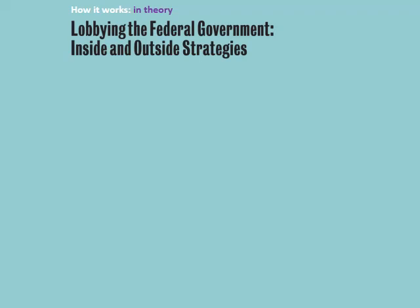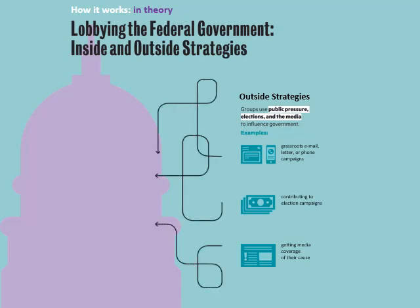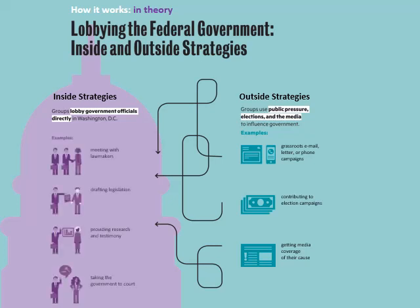In lobbying the federal government, outside strategies use public pressure, elections, and the media to influence government — examples include grassroots email, letter, or phone campaigns, contributing to election campaigns, and getting media coverage of your cause. Inside strategies include directly lobbying officials in Washington D.C., meeting with lawmakers, drafting and producing legislation, providing research and testimony, and taking the government to court using litigation.